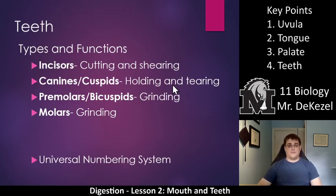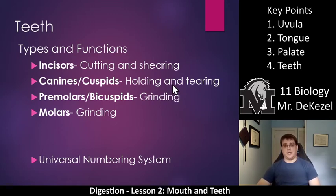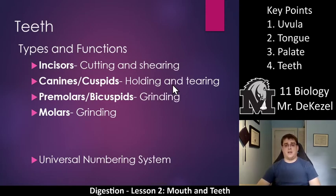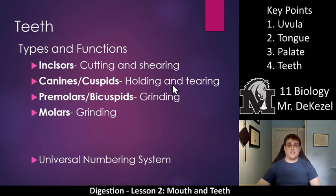So teeth. There are four different types in your mouth and they have different functions. You have incisors — that is for cutting and shearing, those are your front teeth. You have canines, which are the pointy ones for holding and tearing — those are generally for meat. We don't tend to chew meat very much, especially early on in our bite. At the back, that is for the premolars and the molars, which go at the back there for grinding. Generally our vegetables go back there, as well as gum. There's also something called the universal numbering system so that people can refer to teeth by their number and know exactly which tooth they're talking about.